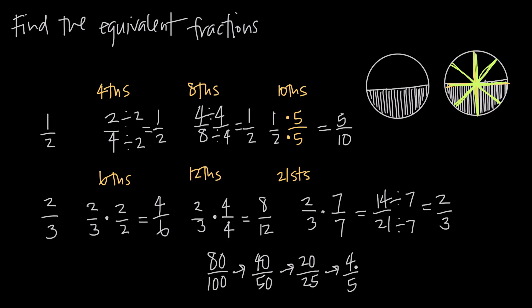To bring it full circle: if I start with 4 fifths and want to express it in hundredths, I ask what I multiply 5 by to get 100 — that's 20. So I multiply the numerator by 20 as well: 4 times 20 gives me 80, and I get back to 80 over 100. That's how you deal with equivalent fractions and reducing fractions.